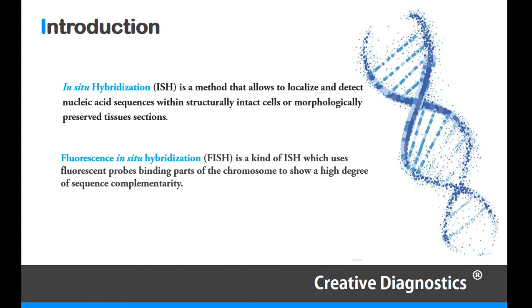Fluorescence in-situ hybridization is a kind of ISH which uses fluorescent probes binding parts of the chromosome to show a high degree of sequence complementarity.